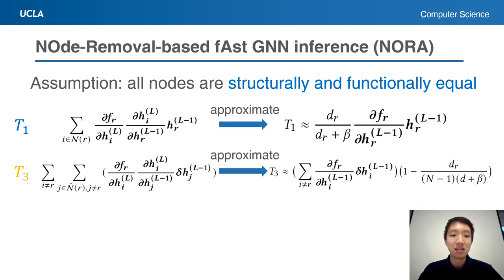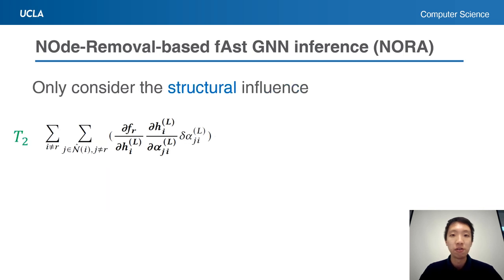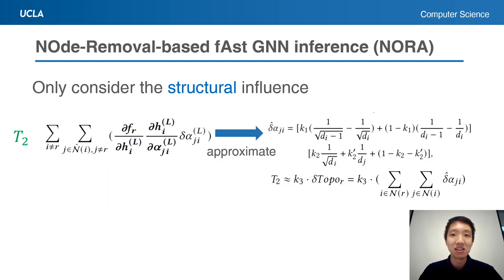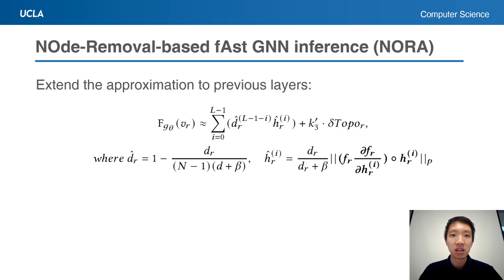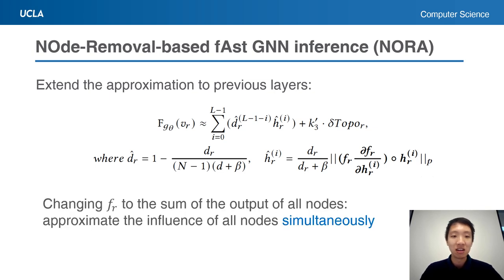For the first and the third term, we make a rough assumption that all nodes are structurally and functionally equal. For the second term, we only consider the structural influence. By combining the three terms' approximations, and by extending the formula to previous layers, we derive this formula. Finally, by changing FR to the sum of the output of all nodes, we can approximate the influence of all nodes simultaneously.